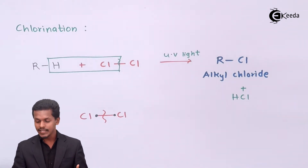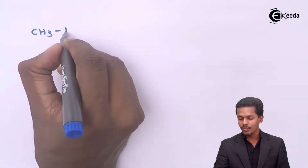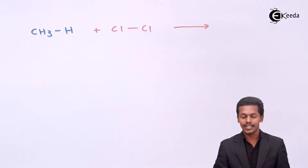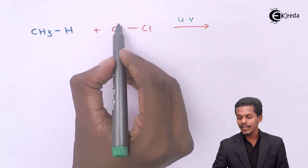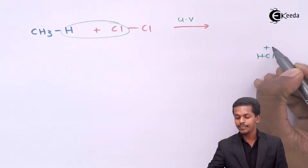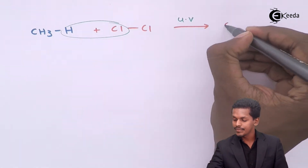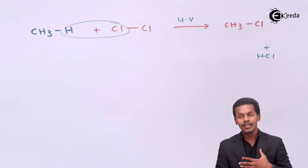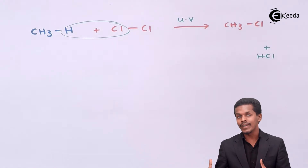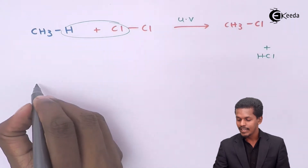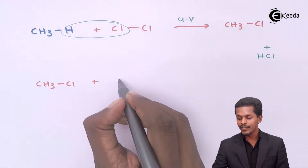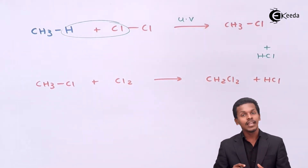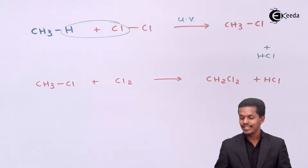For example, if we take CH4 and react it with Cl2 under sunlight or UV radiation, one H is removed along with one Cl to form HCl, leaving CH3Cl as the first product. But since radical formation is involved, the reaction continues — CH3Cl is again treated with Cl2 to form CH2Cl2 along with HCl. This continues until all hydrogen atoms are replaced by chlorine atoms.